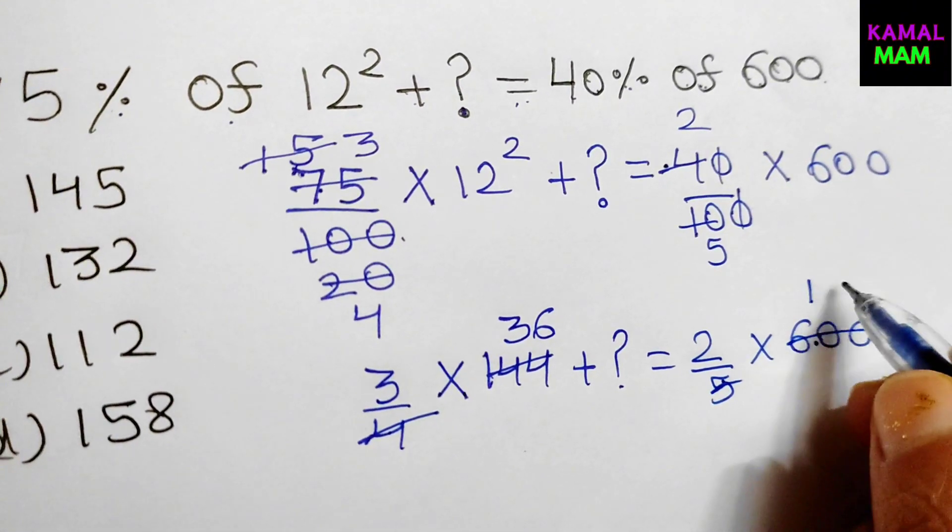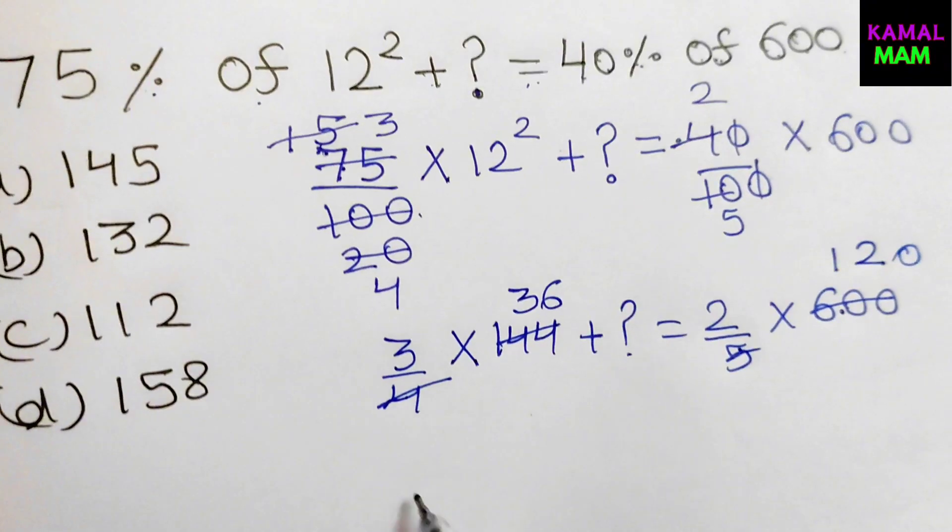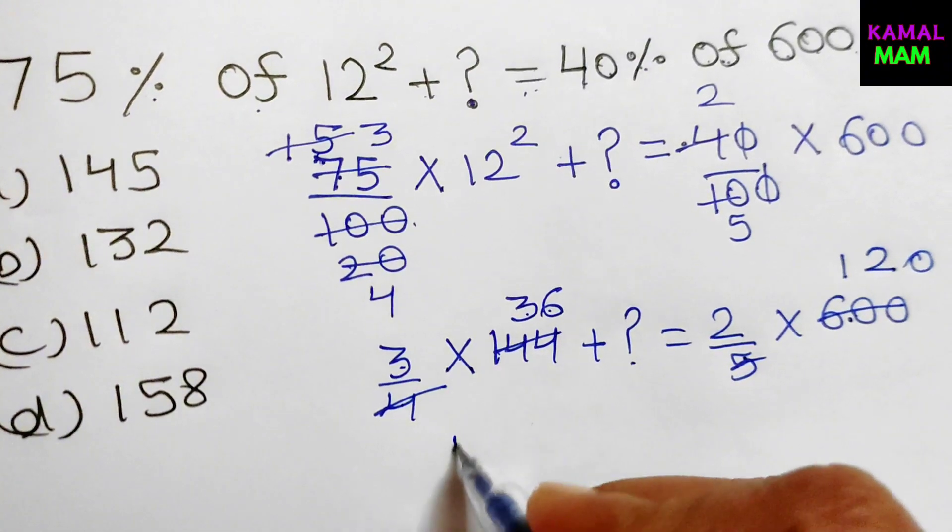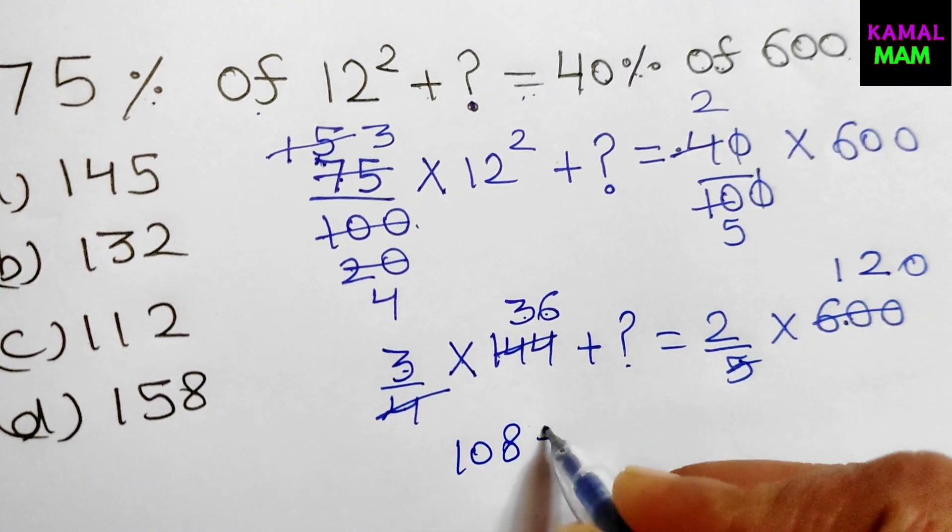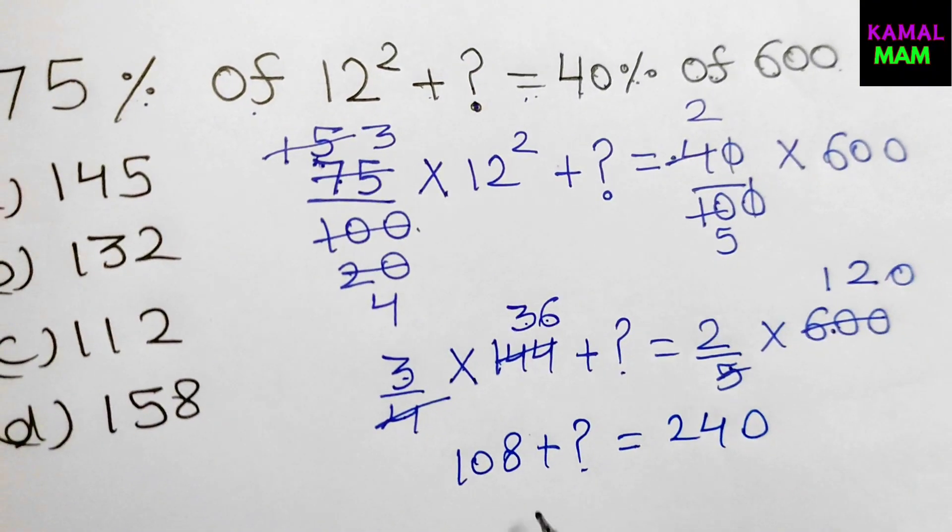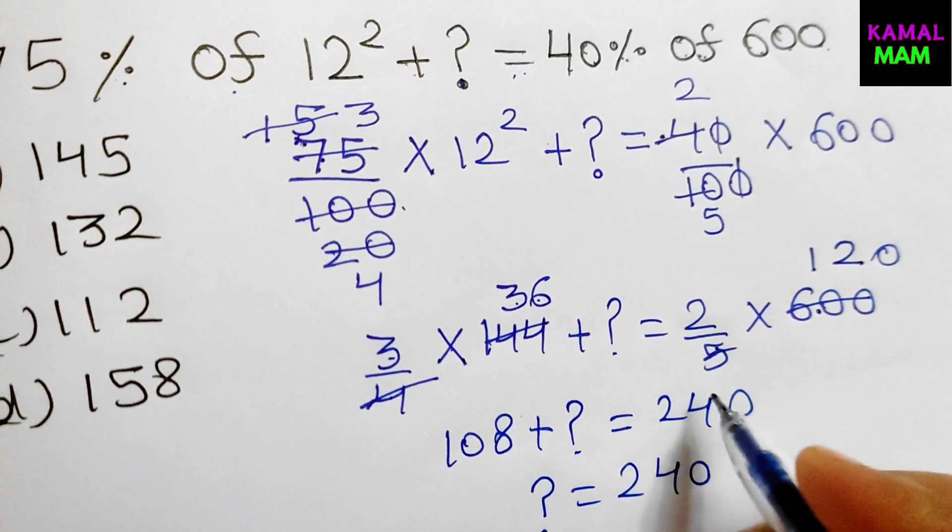5 times 1 is 5, 5 times 2 is 10 and 0 is here. So what we get is 3 times 36 is 108 plus question mark equals 240. So question mark equals 240 and this will go here.